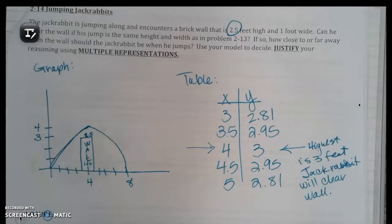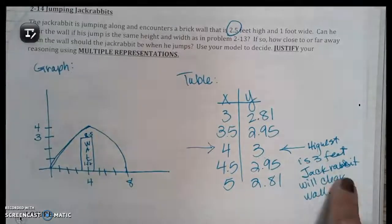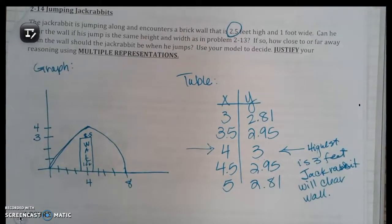As long as he's got room to jump over it or enough space, like a running space. Most rabbits don't jump straight up, although I've seen some jump straight up. They kind of make a little curve. So you're just going to say the highest is 3 feet, so the jackrabbit will clear the wall. Any questions on the last part of the jackrabbit, the second part of the jackrabbit question?